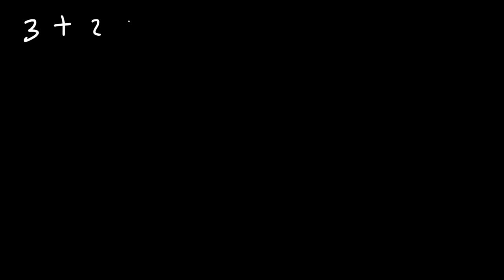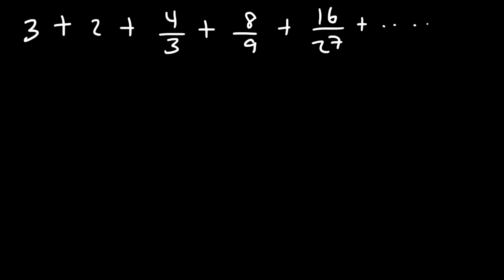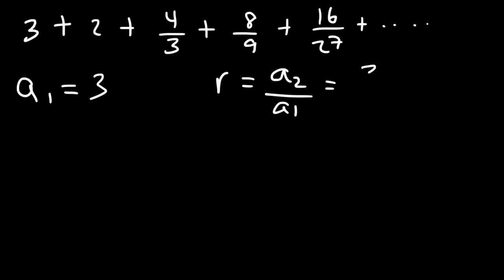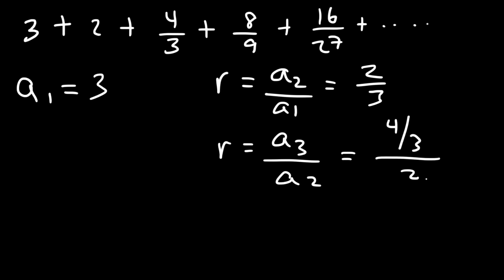Now let's try another example. Let's say it's 3 plus 2 plus 4 over 3 plus 8 over 9 plus 16 over 27, and so forth. We can see that the first term a sub 1 is equal to 3. For the common ratio, divide the second term by the first: 2 divided by 3. To confirm, take the third term divided by the second — 4 over 3 divided by 2. Multiplying top and bottom by 3 gives 4 over 6, which reduces to 2 over 3.